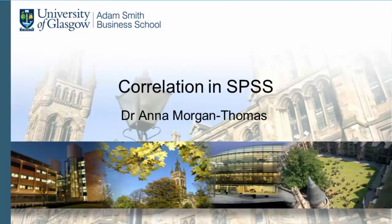This tutorial is devoted to a first parametric test of association: Pearson's correlation. The test is parametric because to use it you need variables that are measured at interval, ratio, or continuous scales. We have two such variables in our data set — age and income — and we will carry the tests on those variables.